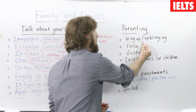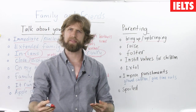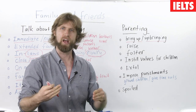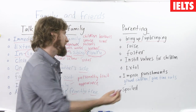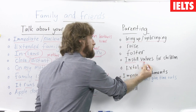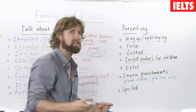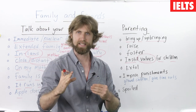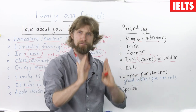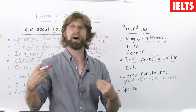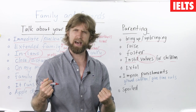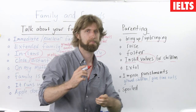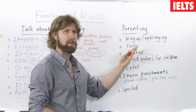First, we have bring up and upbringing — this means how you raise the child, how you teach the child, and what values you give it. You can also instill values for children; the values are what they believe is right or wrong, and what you think is important to tell children — for example, lying is bad, fighting is bad, or some parents will say children should sometimes fight to learn how to compete in the business world. You can use the word upbringing — for example: I had a very difficult upbringing when I was young; my father would always hit me when he punished me.